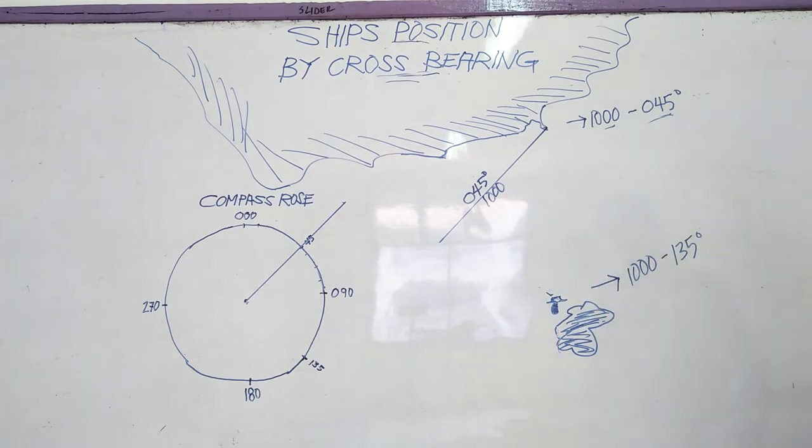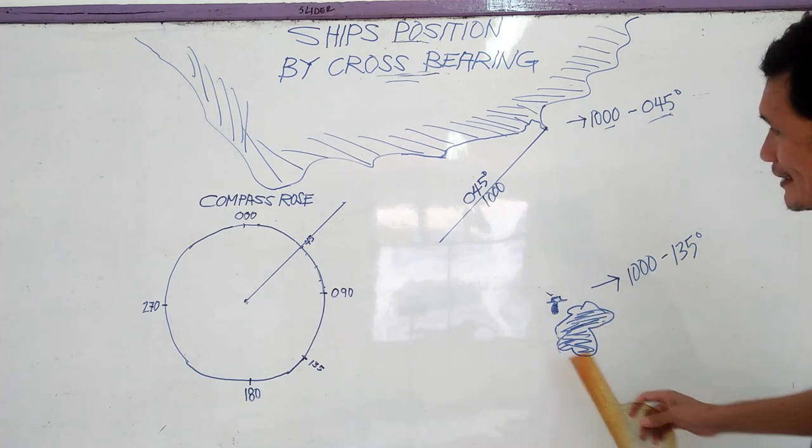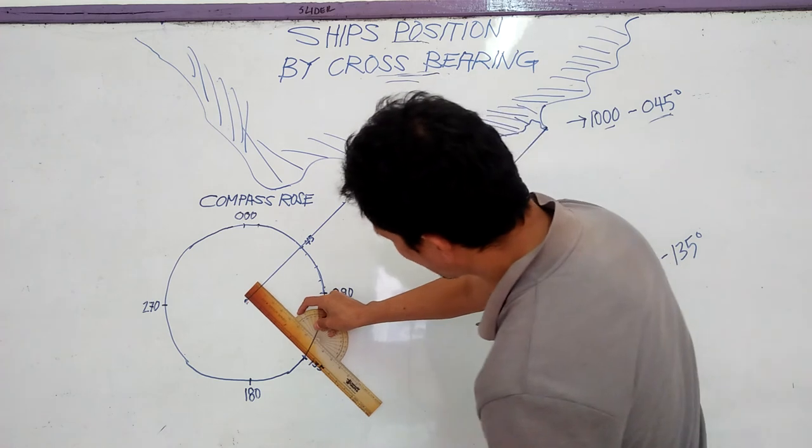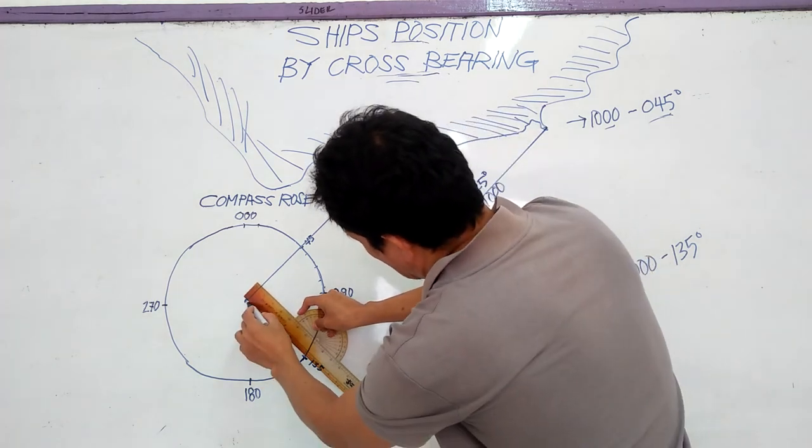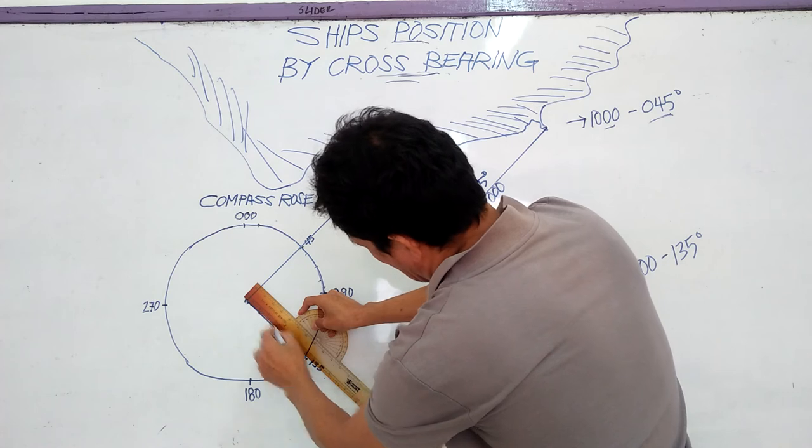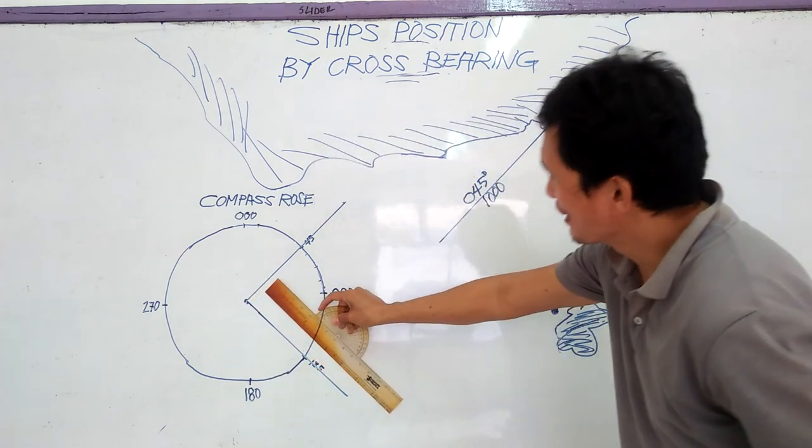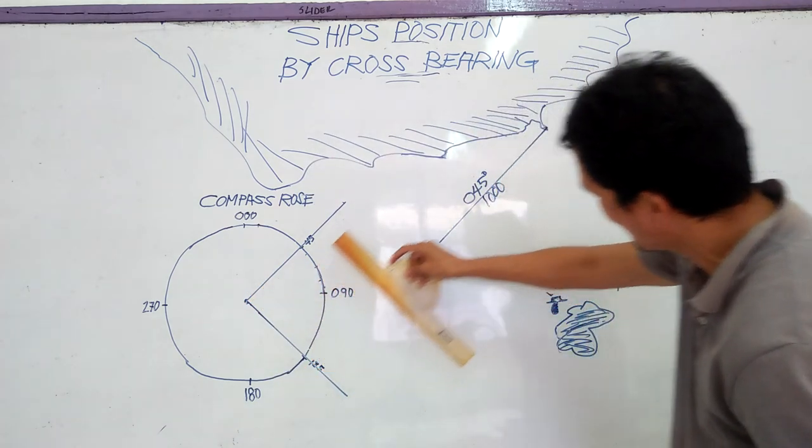the bearing of the buoy at 0800 hours is 135. 135 here. Bring the 135 here.